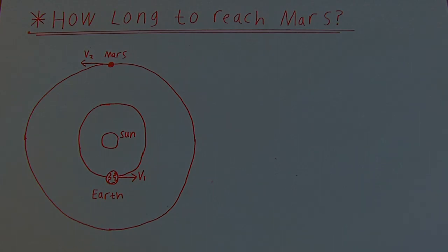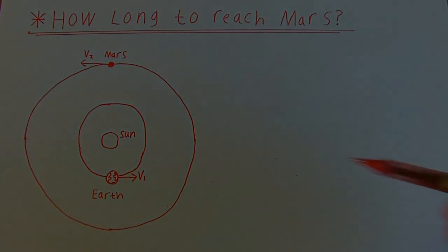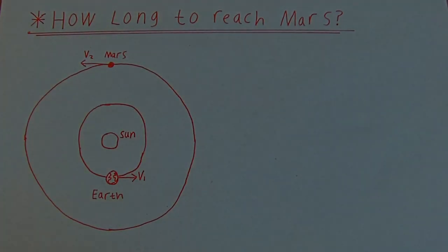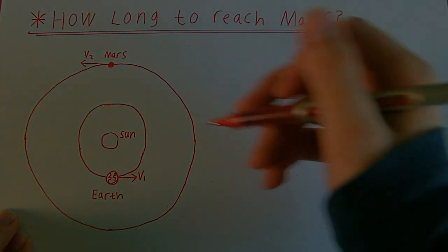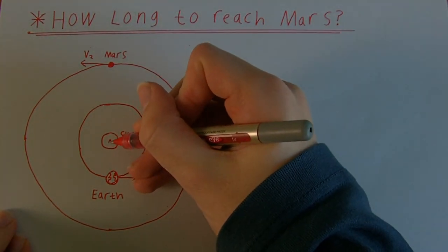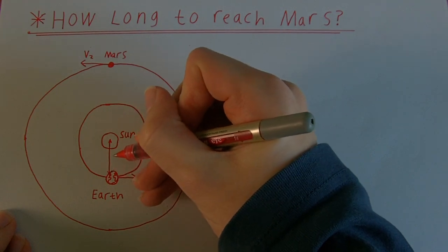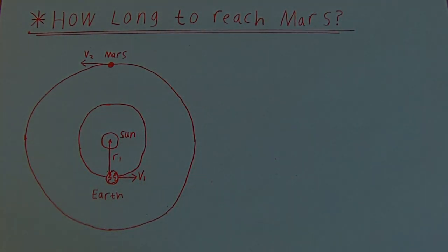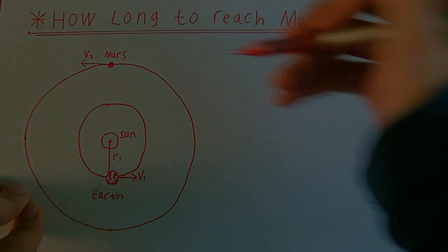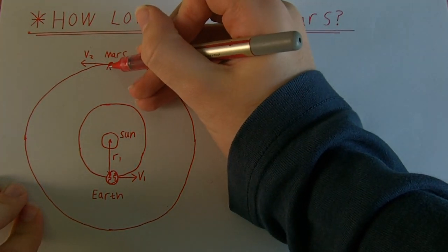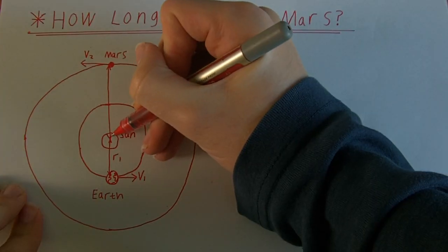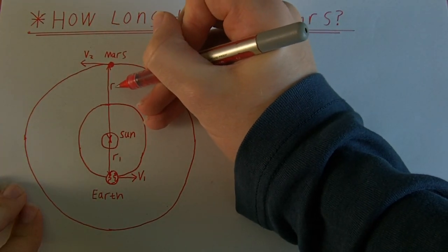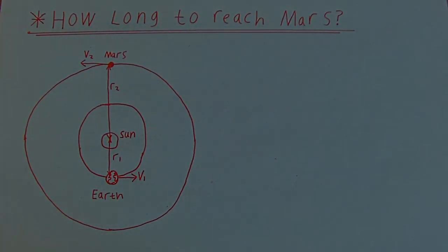So, how long does it take to reach the planet Mars from the Earth? Here we have a diagram of the inner solar system. Here we have the Sun, the Earth, and Mars. Earth is orbiting the Sun at a distance I'm going to call R1, which is just one astronomical unit, and Mars is travelling in a circular orbit at a distance I'm going to call R2, which is further out from the Earth.